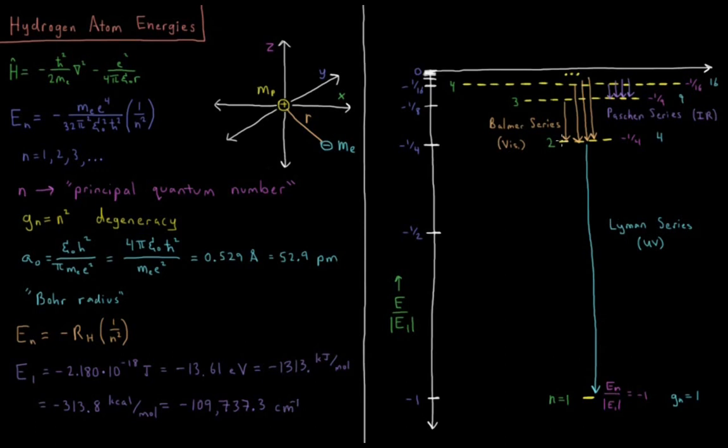The Balmer series in the visible, the four lines in the visible I've drawn there, there are more in the UV, but those are the four that I drew in. The Paschen series in infrared transitions down to n equals 3, and you can see more as you go up there.